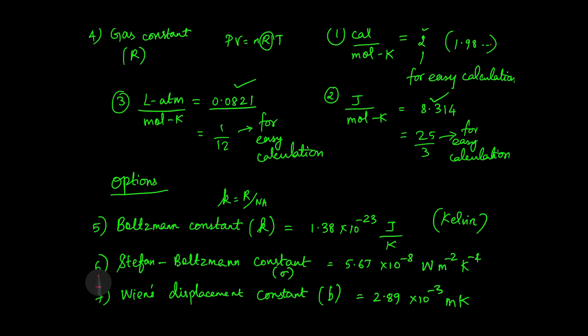Gas constant is represented by R. PV is equal to nRT — the ideal gas equation — where R is the gas constant.